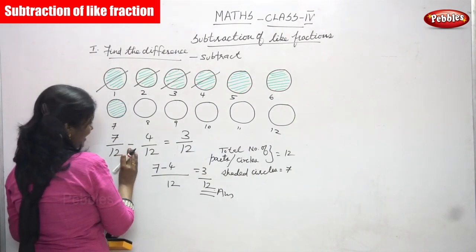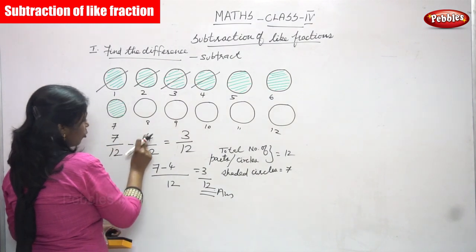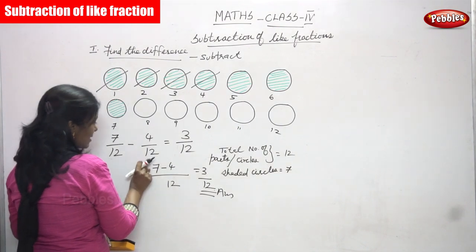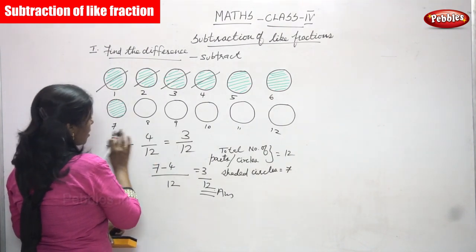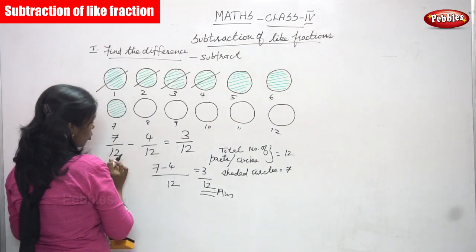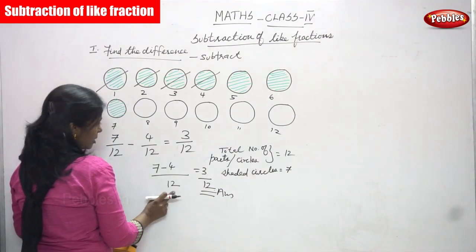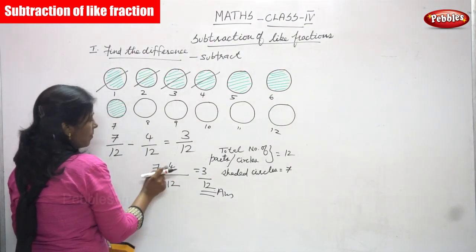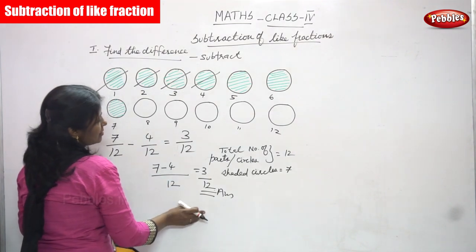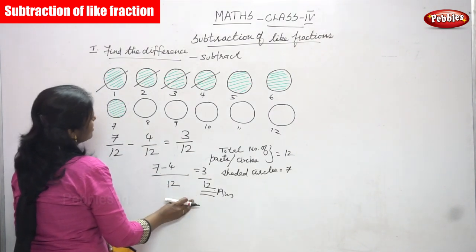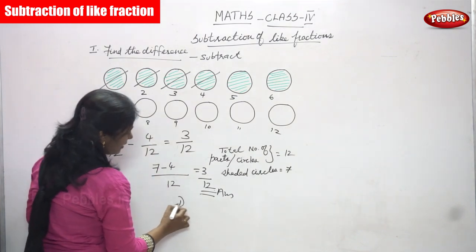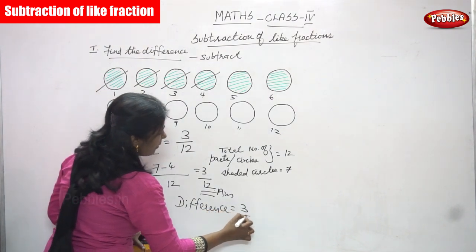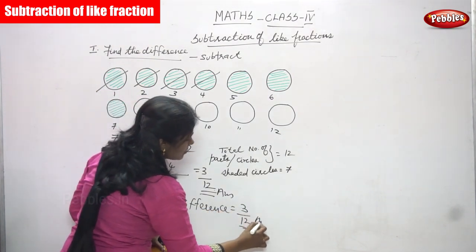Look at the denominators first — if the denominator is the same, write it once. Then write the numerators with the sign: 7 minus 4 gives 3 by 12. So 3 by 12 is the right answer. The difference is equal to 3 by 12 — this is the exact answer for the question.